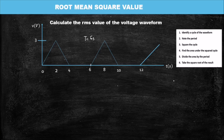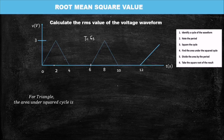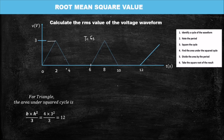After identifying the cycle, we square the cycle. In squaring the cycle we use the area under the squared cycle. For a triangle, the formula for the area under the squared cycle is: base times height squared, all over three. The height here is three, and the base is obtained by subtracting the first number from the second — that is four minus zero, which gives you four. So the base is four, and we apply the formula to get twelve.